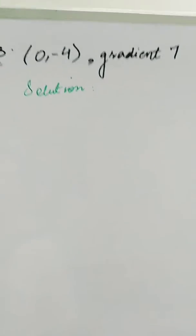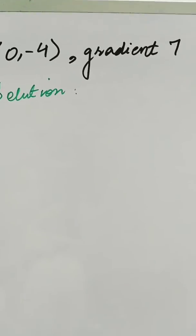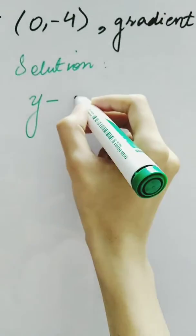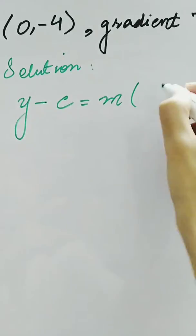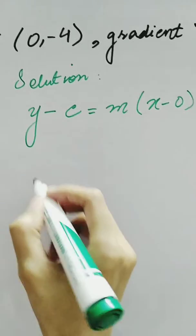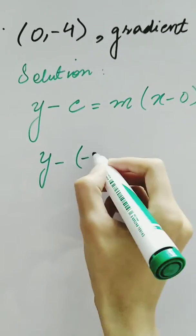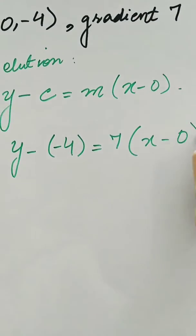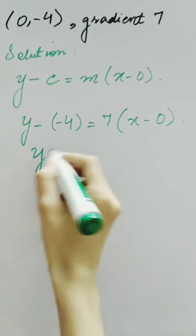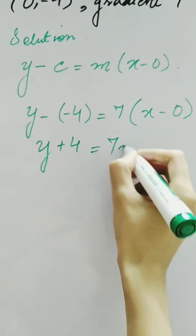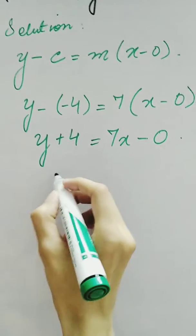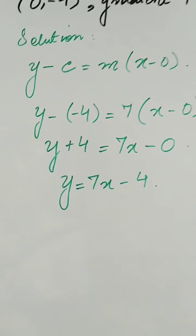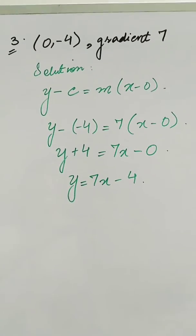We have another question in which the coordinates are given as (0, -4) and gradient is 7. The equation of a line is y - y₁ = m(x - x₁). Here, y-intercept is -4, gradient is 7, and x-intercept is 0. So we have y + 4 = 7x - 0, giving y = 7x - 4. This is our equation.